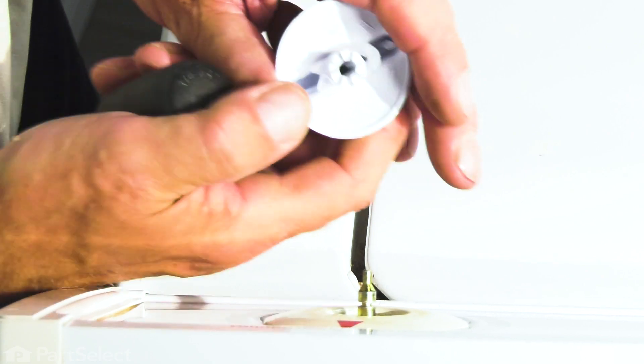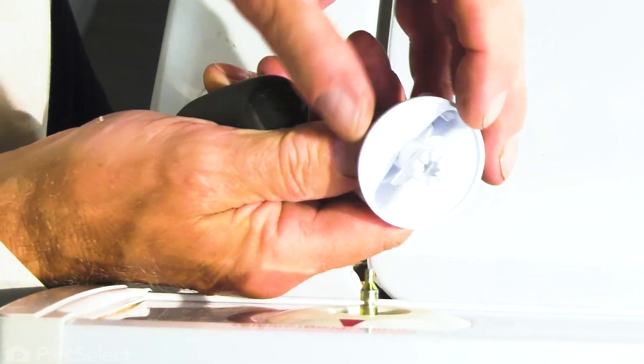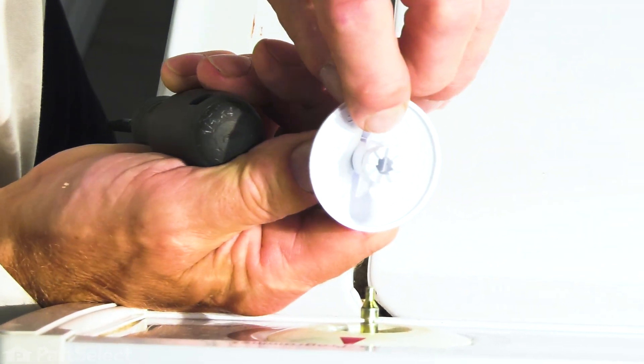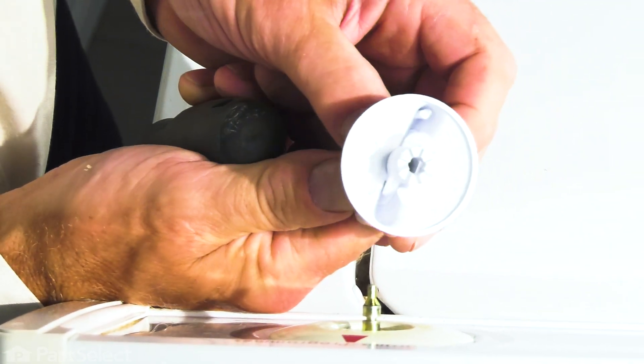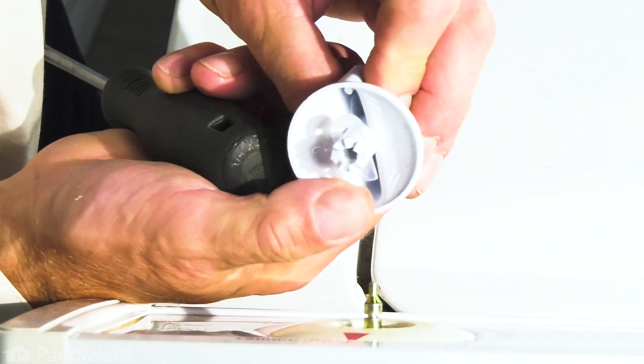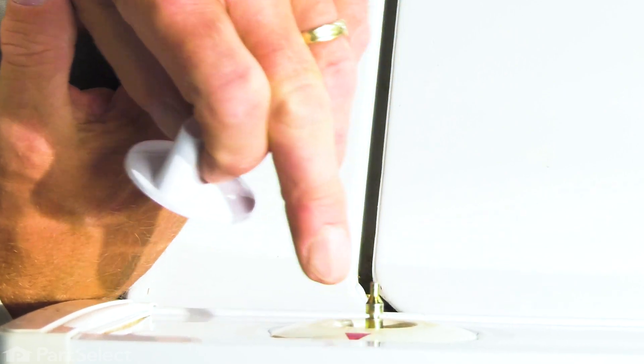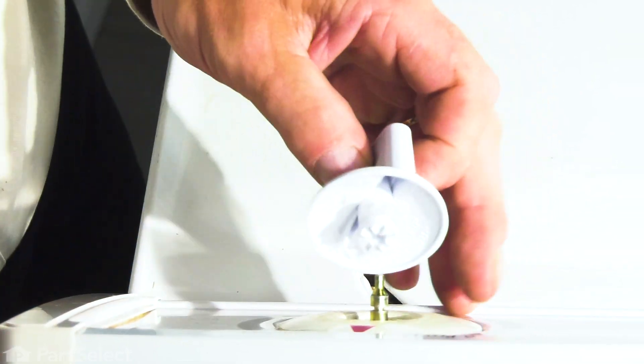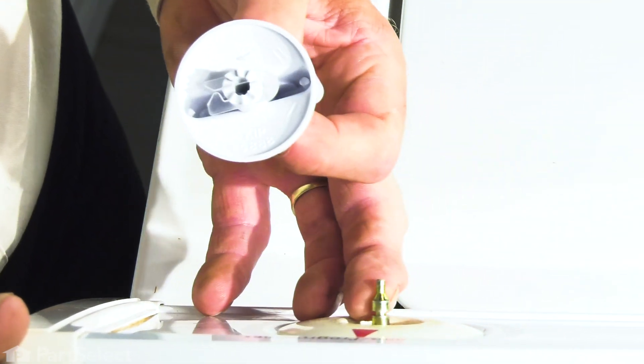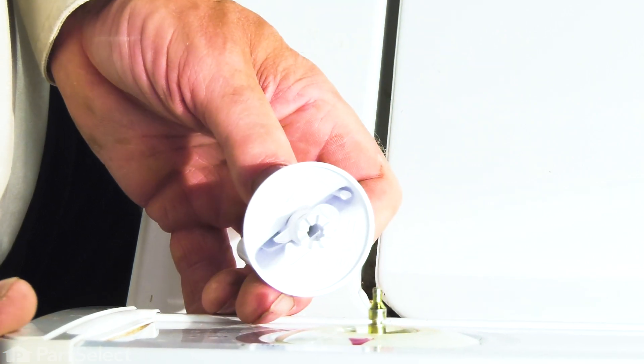To install the new one, make sure the clip is fully inserted onto the hub of that knob. There's enough flex in it that when we push it onto the timer shaft, it's tapered and will slide right over, and the clip will lock into the groove on the timer shaft.